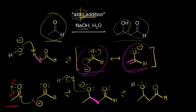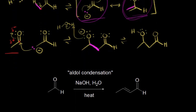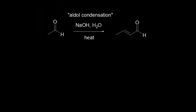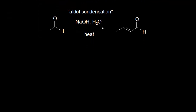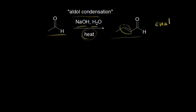An aldol condensation is a continuation of what we just discussed — you can form different products depending on reaction conditions. Here we're starting with acetaldehyde again and sodium hydroxide in water, but adding heat, so we get a different product called an aldol condensation. The product is an enal: we get a double bond for the 'ene' and then an aldehyde. This is also referred to as alpha-beta unsaturated because the alpha carbon and beta carbon are present, and it's unsaturated because we formed a double bond.